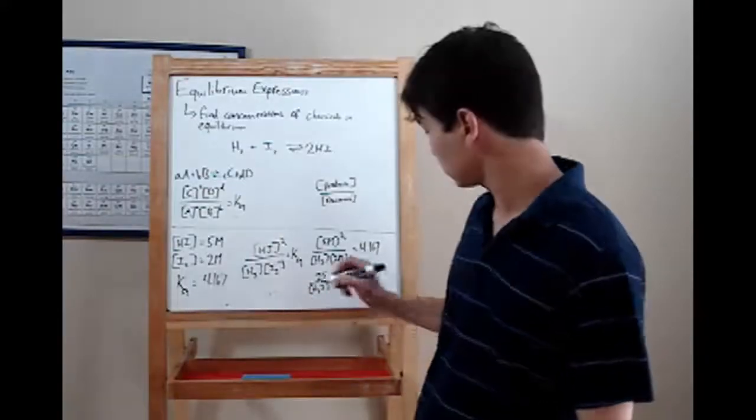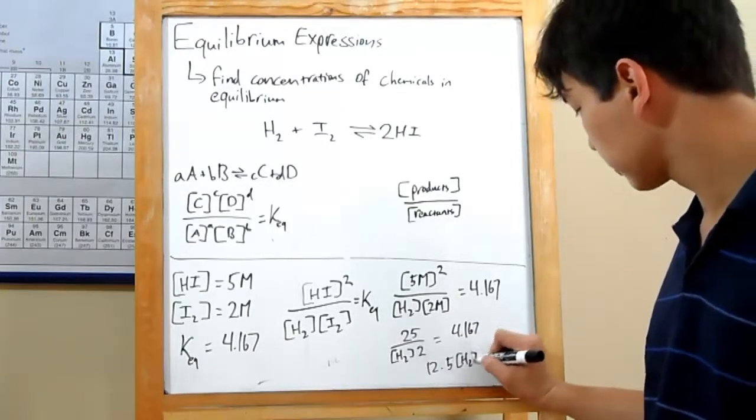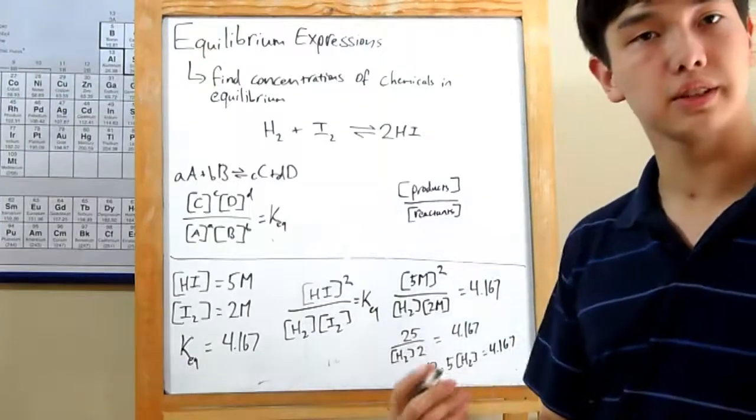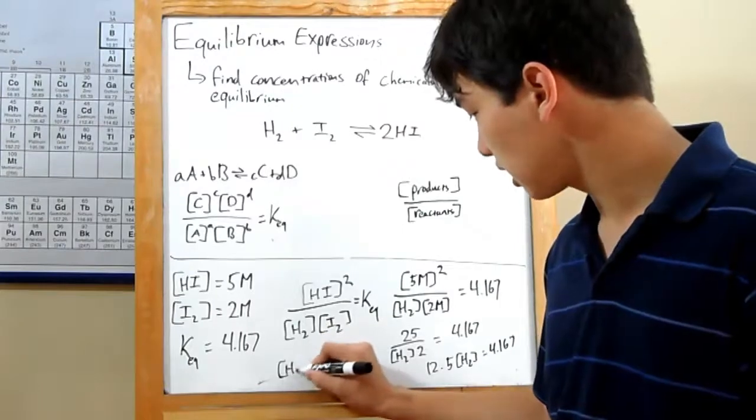So after you plug that in, 12.5 times the concentration of H2 equals 4.167. And then you just divide through, giving you about 3 molars of H2.